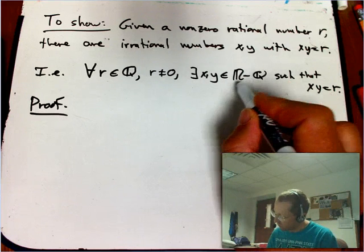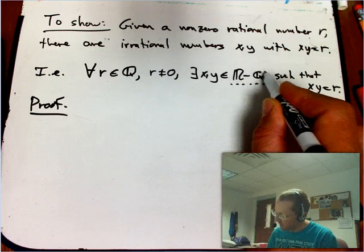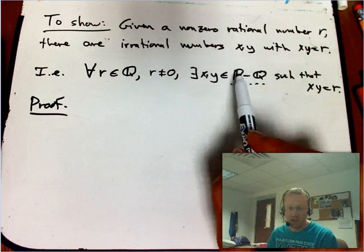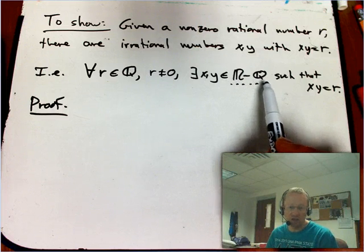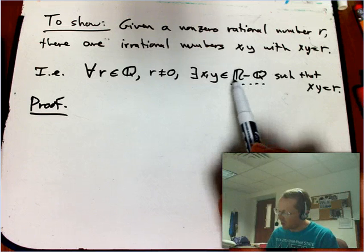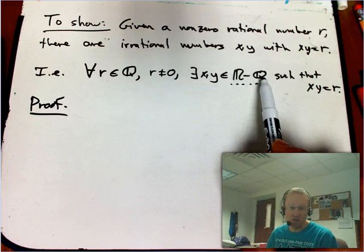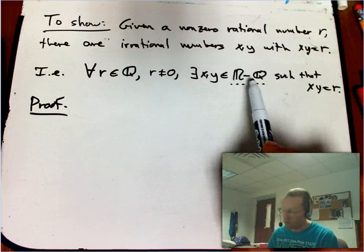There exists X and Y in, and this is one of the notations you could use for the irrational numbers, it's a very handy notation. When you take a set, this is the set of real numbers, minus another set that's a subset of it, then you're just saying everything in R, every real number that is not a rational number. So this is one way to say that you're irrationals.